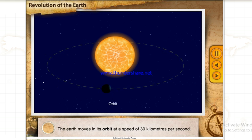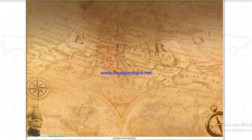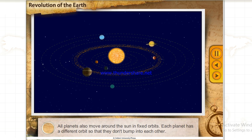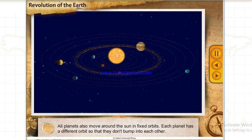The Earth moves in its orbit at a speed of 30 kilometers per second. All planets also move around the Sun in fixed orbits. Each planet has a different orbit so that they don't bump into each other.